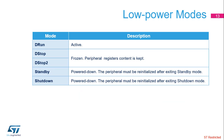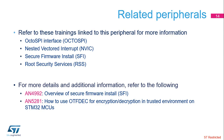The OTF-DEC is active in D-run mode. In D-stop or D-stop 2 mode, the OTF-DEC is frozen and its register content is maintained. In standby or shutdown mode, the OTF-DEC is powered down and must be reinitialized afterward. The OTF-DEC module has relationships with the following modules: OctoSPI interface, nested vectored interrupt controller (NVIC), Secure Firmware Install (SFI), and root security services with SFI information. For more details, please refer to Application Note AN4992 on secure firmware install and Application Note AN5281 for OTF-DEC encryption and decryption code examples.